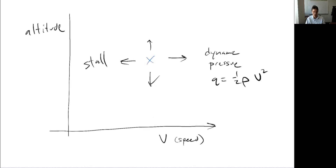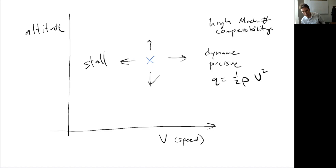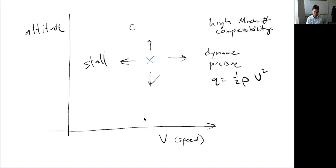Going down to the ground, nothing is limiting me there. On the high-speed end, even if my structure can withstand the loads, my Mach number may be too high, causing large compressibility drag — so high Mach number for compressibility is another limit. That depends on your airplane; for a large transport aircraft we're going to hit a ceiling where drag gets too high. Going up, typically the propulsion system limits us — the density becomes too low to support propulsion. This is called the ceiling, the altitude we can't exceed.